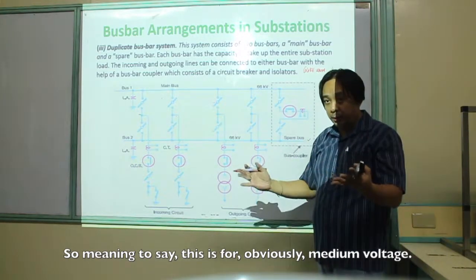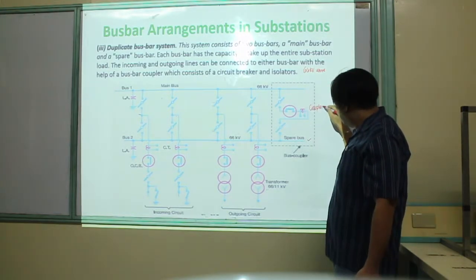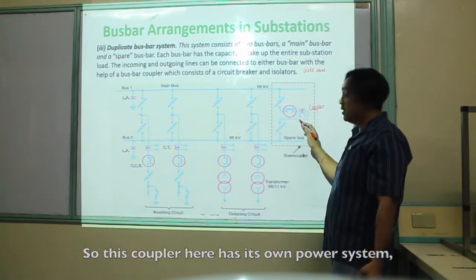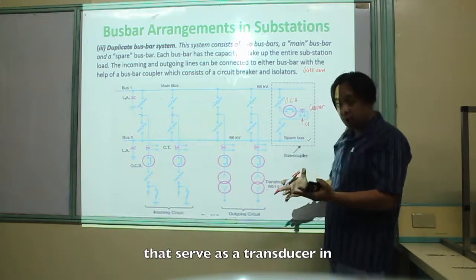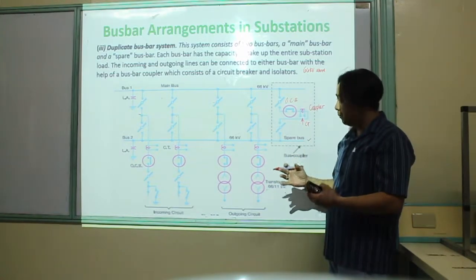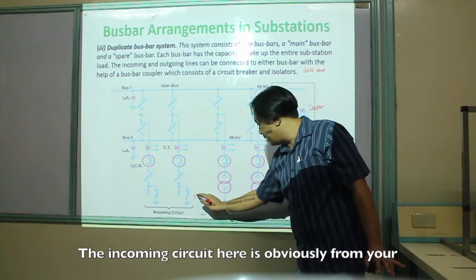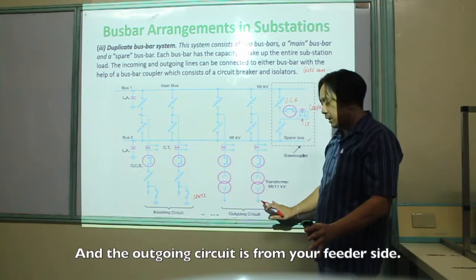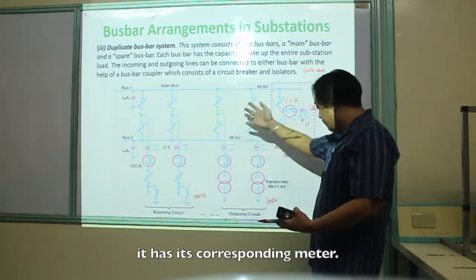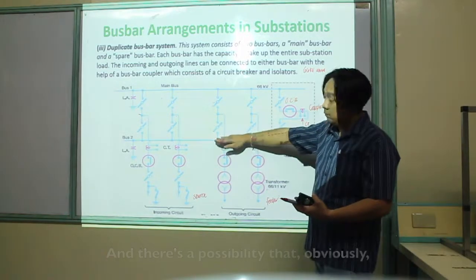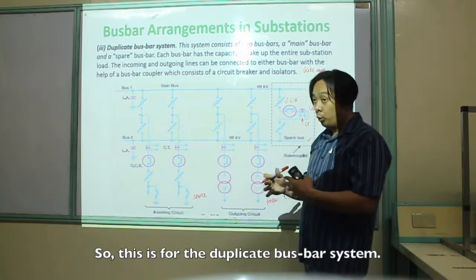This is obviously for medium voltage. The two bus bars are coupled by a coupler. This coupler has its own protection — a circuit breaker and a current transformer that serves as a transducer, minimizing fault current to a certain value. There is an incoming circuit, which is your source side, and an outgoing circuit, which is your feeder side. If one bus bar is being maintained, there is a spare bus bar that covers the losses.